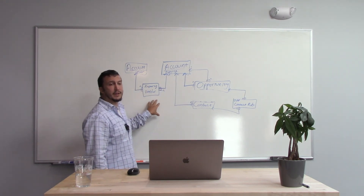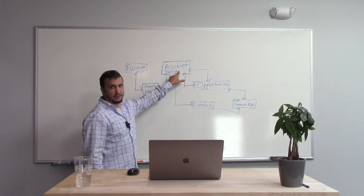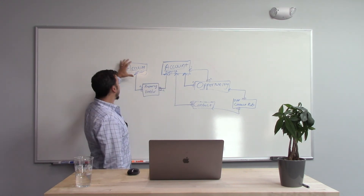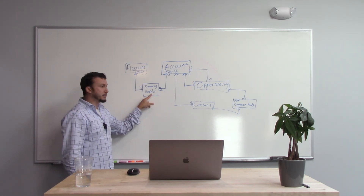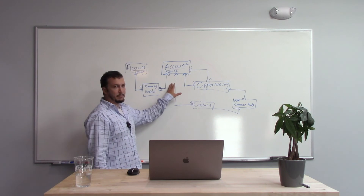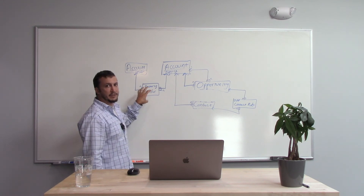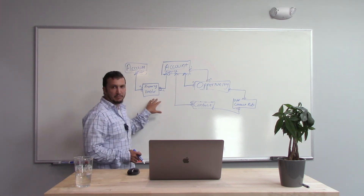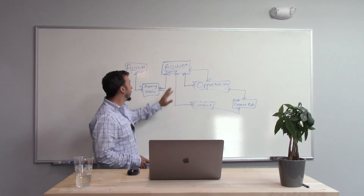This also helps us in our user interface. When we see a related list looking at a property record, we can name it 'Vendors for This Property.' When we're looking at our vendor account, we have a related list to the same object but we can call it 'Properties Serviced.' The other benefit of having the master detail relationship here is that you can pull values down from the parent into the related list, whereas with a normal lookup you'd need an extra formula field in the child object. This is a huge advantage to using the master detail relationship whenever you can.